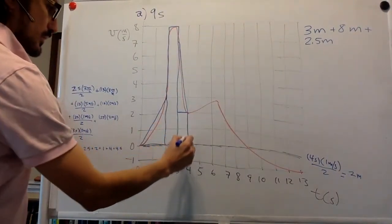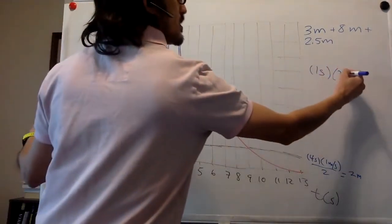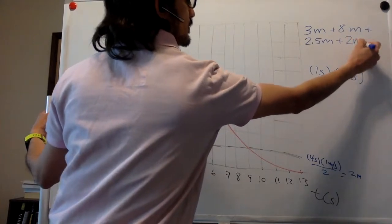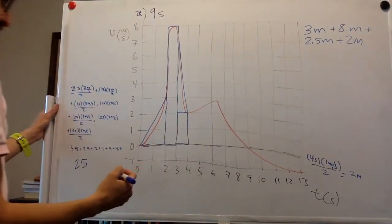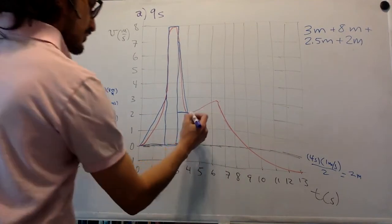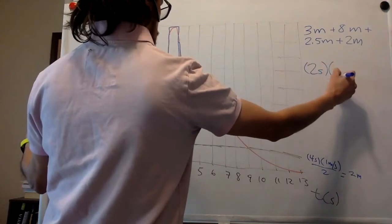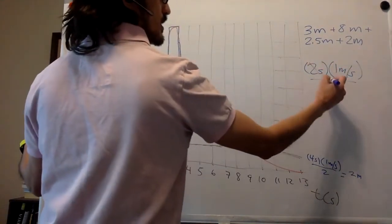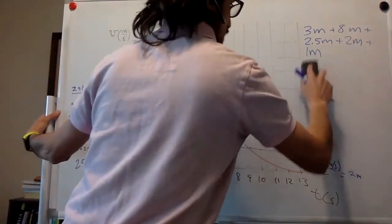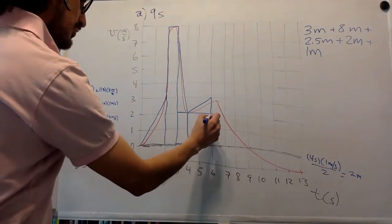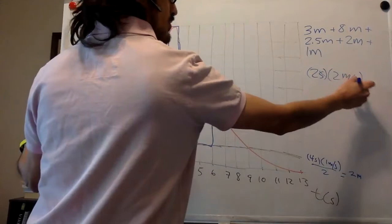And then we have this rectangle over here. So that is one second times two meters per second. That's two meters. And then I also use this triangle over here. So I use this one. So that's two seconds times two meters per second divided by two. That's two meters.